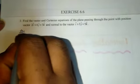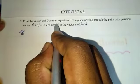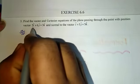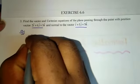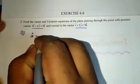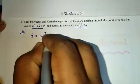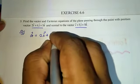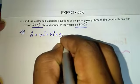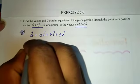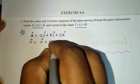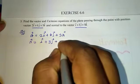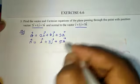What do we find? Vector and Cartesian equations of the plane. It is passing through one point and one normal vector. The point we denote as a⃗ = 2î + 6ĵ + 3k̂, and the normal vector n⃗ = î + 3ĵ + 5k̂.